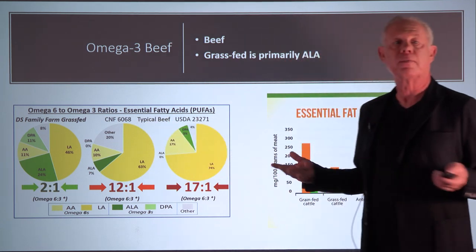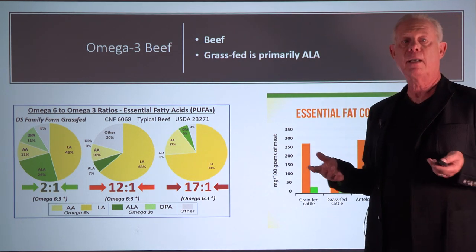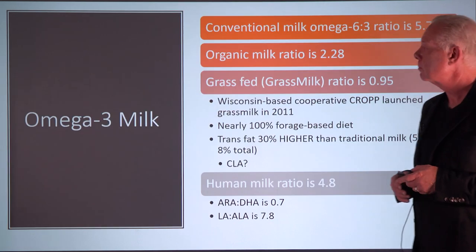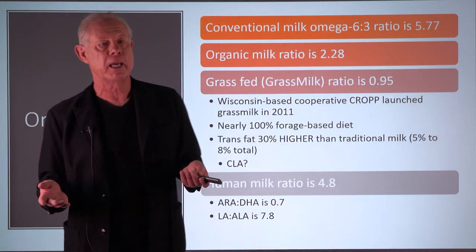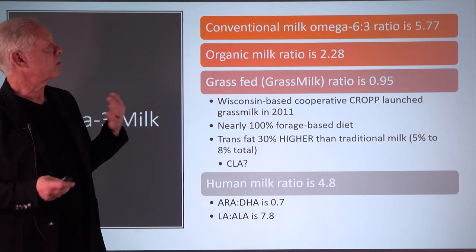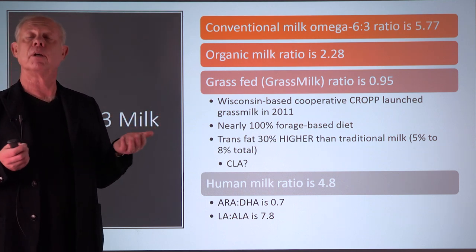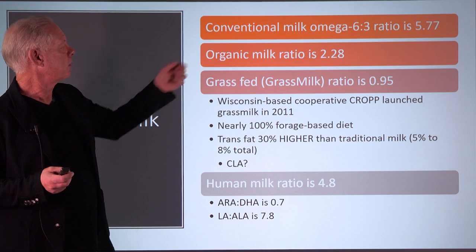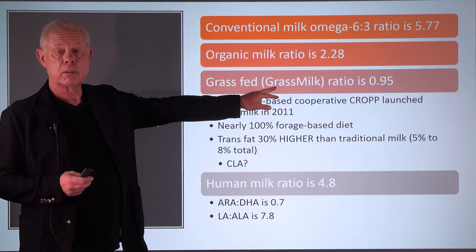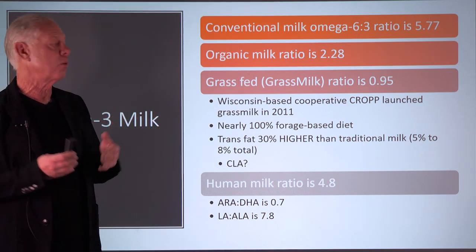Grain-fed cattle feed gives a 12-to-one to 17-to-one omega-6 to omega-3 ratio. Grass-fed hits a normal ratio. Same thing with milk — conventional milk has a ratio of 5.77, organic milk is 2.28, and grass-fed grass-finished milk (there's a brand called Grass Milk, a Wisconsin-based co-op) is 0.95 — basically a one-to-one ratio, a perfect ratio. For comparison, human milk is 4.8 with an arachidonic acid to DHA ratio of 0.7, and LA to ALA is 7.8.